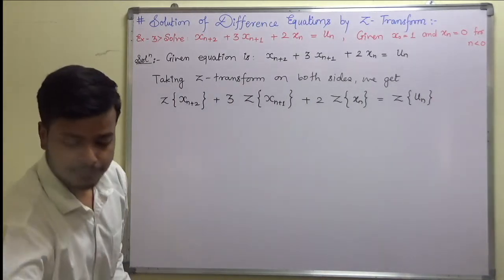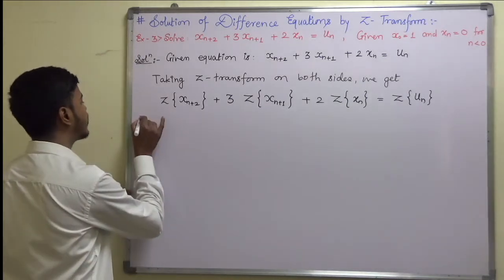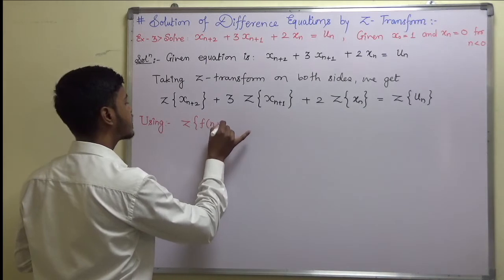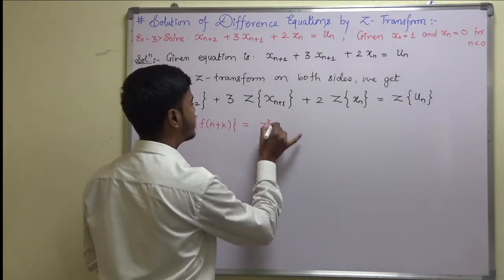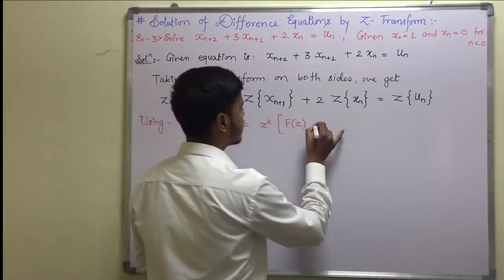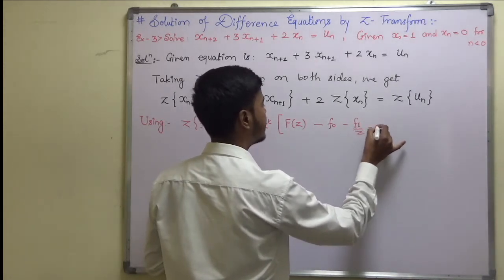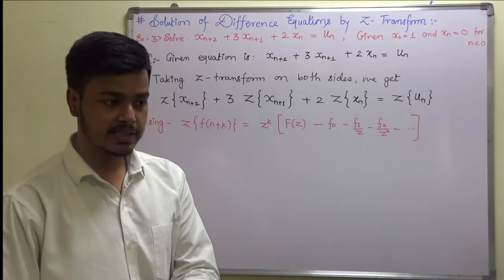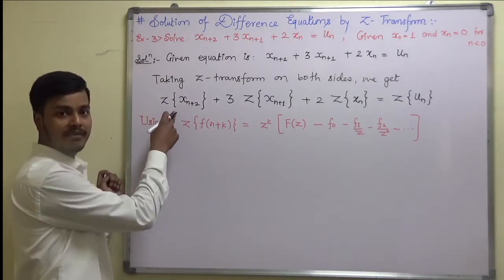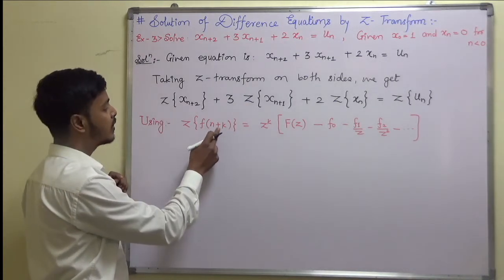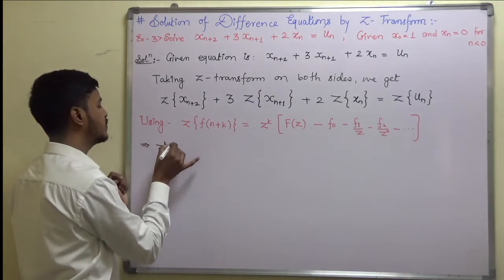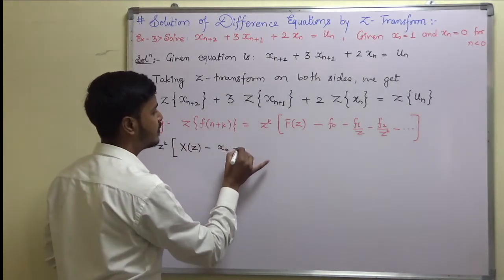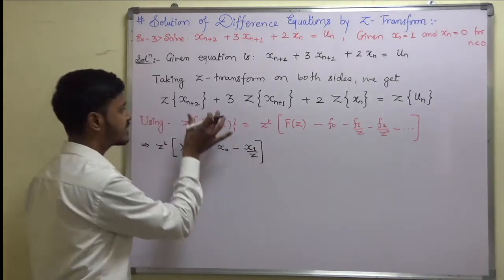It's good practice to write down the result to avoid silly mistakes. Using Z-transform of f(n+k) = z^k times [F(z) - f(0) - f(1)/z - f(2)/z² - and so on]. Now applying this result: Z-transform of x(n+2), where k=2, gives z² times [X(z) - x0 - x1/z]. This is the complete Z-transform of the first term.